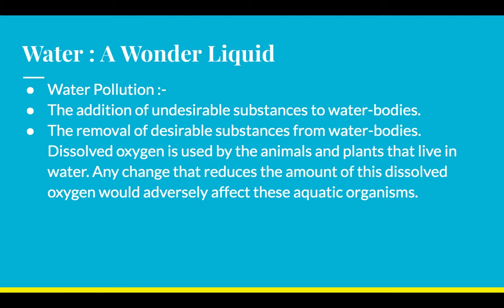Dissolved oxygen is used by the animals and plants that live in water. Dissolved oxygen flows in water so that aquatic animals can survive. Any change that reduces the amount of dissolved oxygen would adversely affect these aquatic organisms, as humans perform activities that drive dissolved oxygen out of the water.